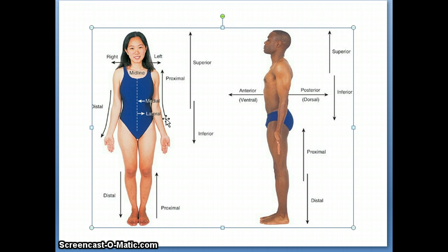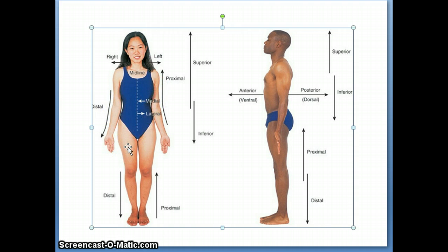The last set of terms are contralateral and ipsilateral. Ipsilateral has two eyes, which means the two parts are on the same side. So, if I said the right leg and the right arm are blank, you would say they are ipsilateral — they are on the same side. If I said the left arm and the right leg are blank, your answer would be they are contralateral — they are on opposite sides. When you see two right sides, or a right and a left, use ipsilateral if they're on the same side, and contralateral if they are on opposite sides.